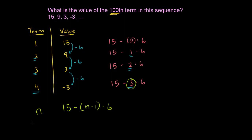So if you want to figure out the 100th term of this sequence, I didn't even have to write it in this general term. You could just look at this pattern. The 100th term in our sequence is going to be 15 minus (100 minus 1), which is 99, times 6. I just followed the pattern. Term 1, you had a 0. Term 2, you had a 1. Term 3, you had a 2. Term 100, you're going to have a 99.